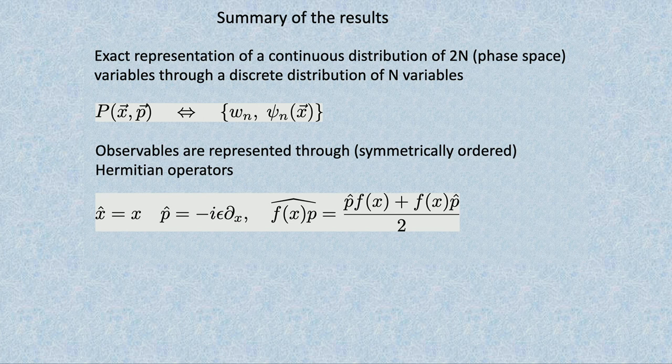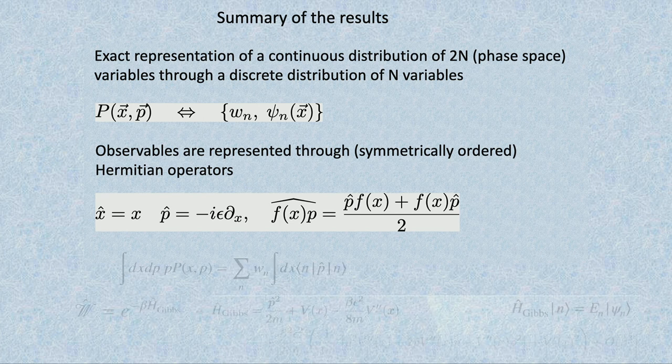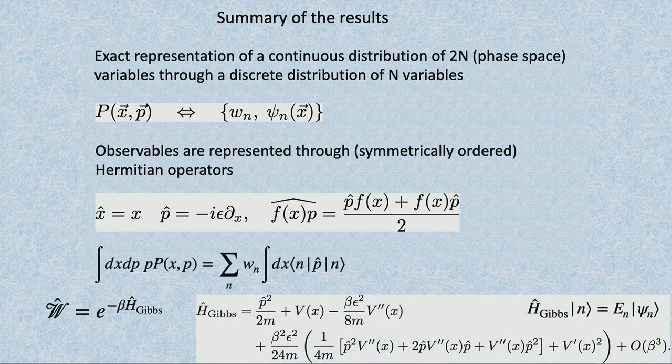In this language, your observables x and p become operators — exactly the same operators that appear in quantum mechanics. In particular, if you want to compute the average of p, it's the same as computing the average of operator p in these eigenstates. If you ask what the Gibbs Hamiltonian describing these eigenstates is, you can do a high-temperature expansion — otherwise it's a complicated problem — and you'll get your normal quantum Hamiltonian plus corrections.